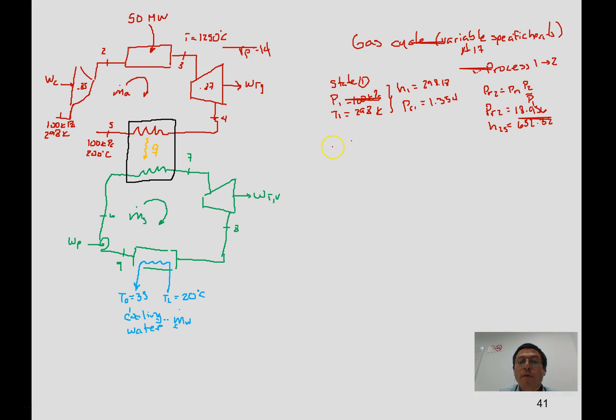Now process 1-2 is isentropic, so we can solve PR2 equal to PR1 times the pressure ratio.